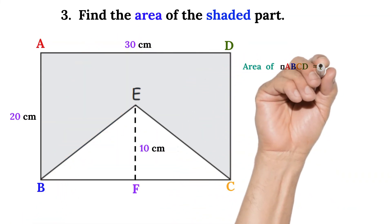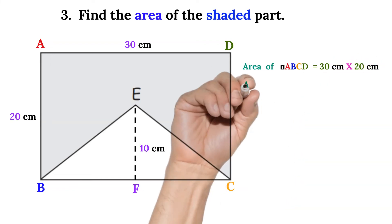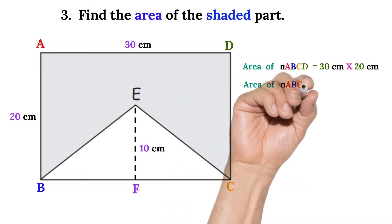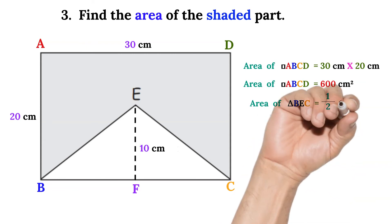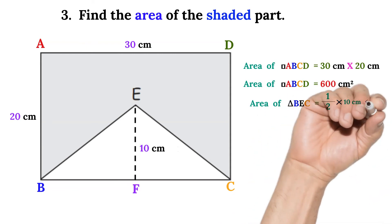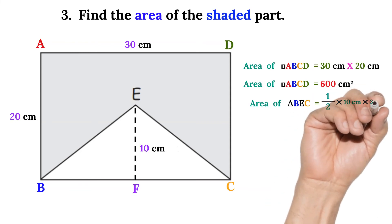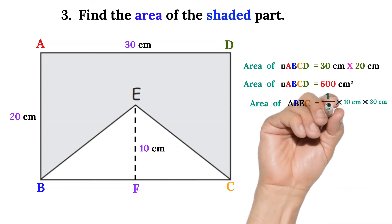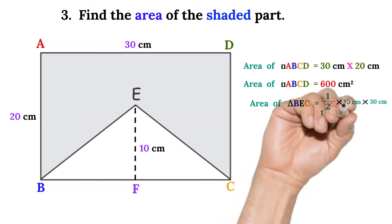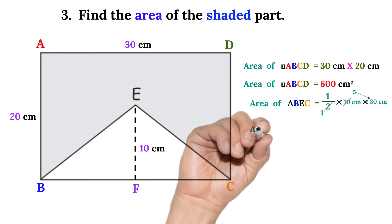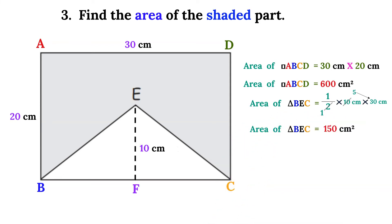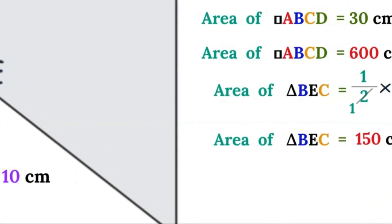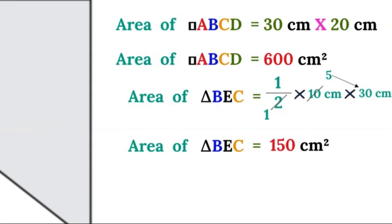To find the area of the shaded region, we will have to find the area of rectangle ABCD, which is 30 centimeters times 20 centimeters. 30 times 20 will give us 600 centimeters squared. Now the area of triangle BEC: one over two times 10 centimeters times 30 centimeters. Two cancels 10 to give five; five times 30 will be 150 centimeters squared.